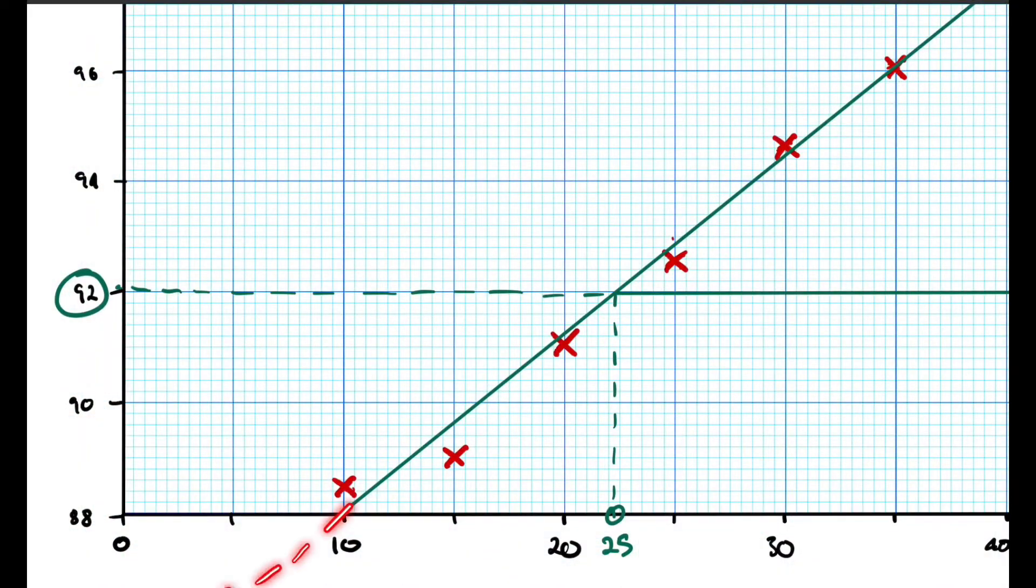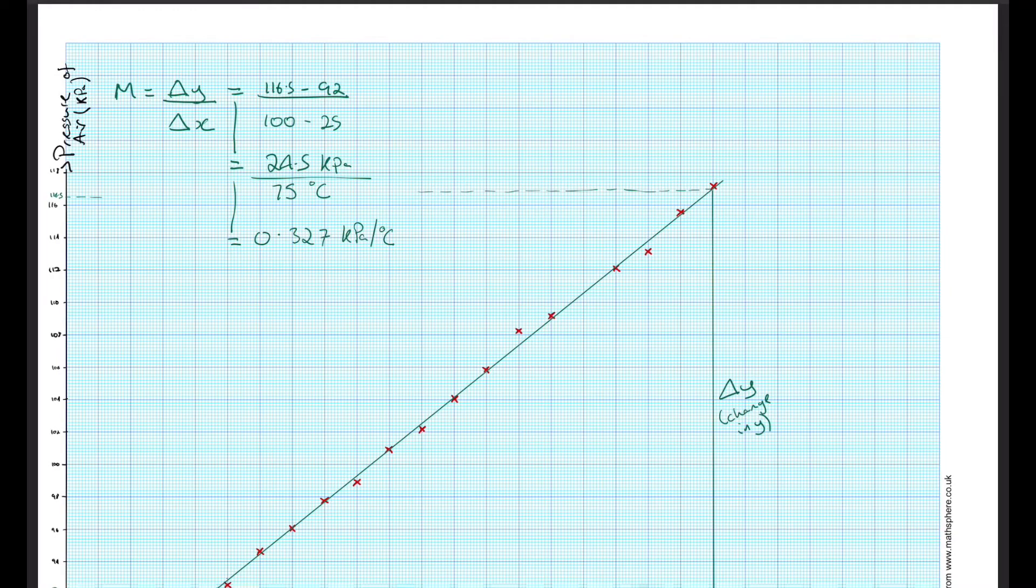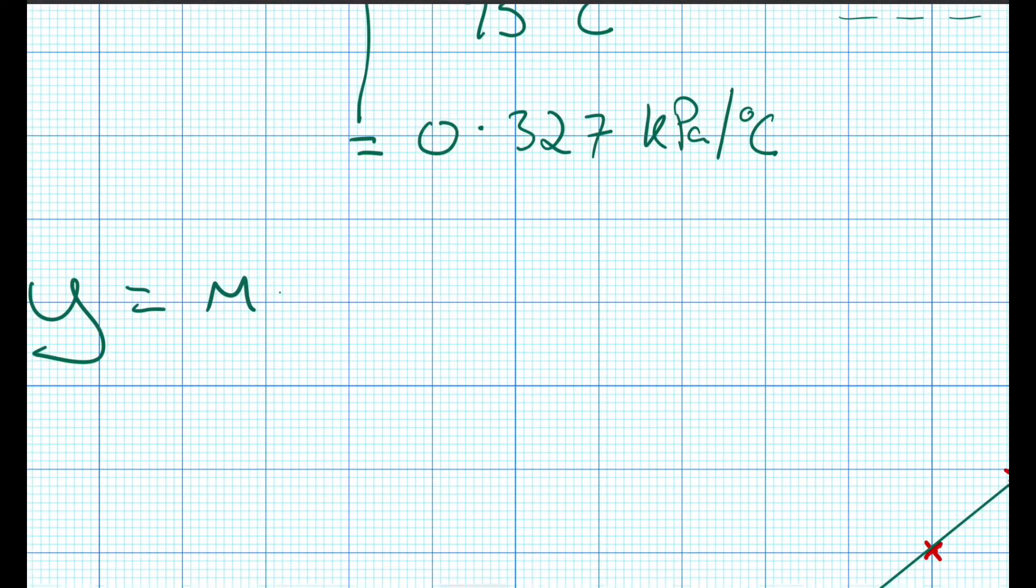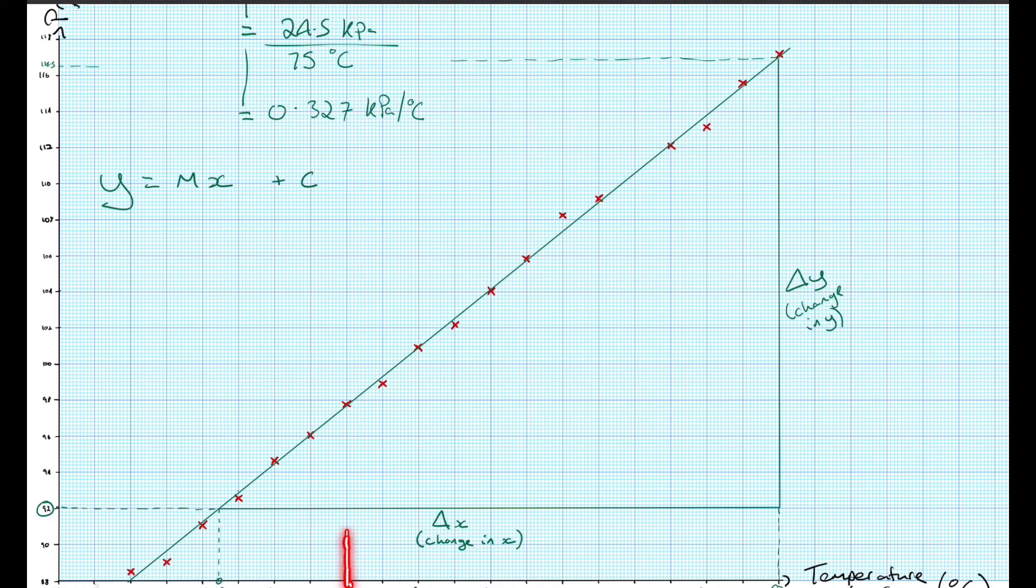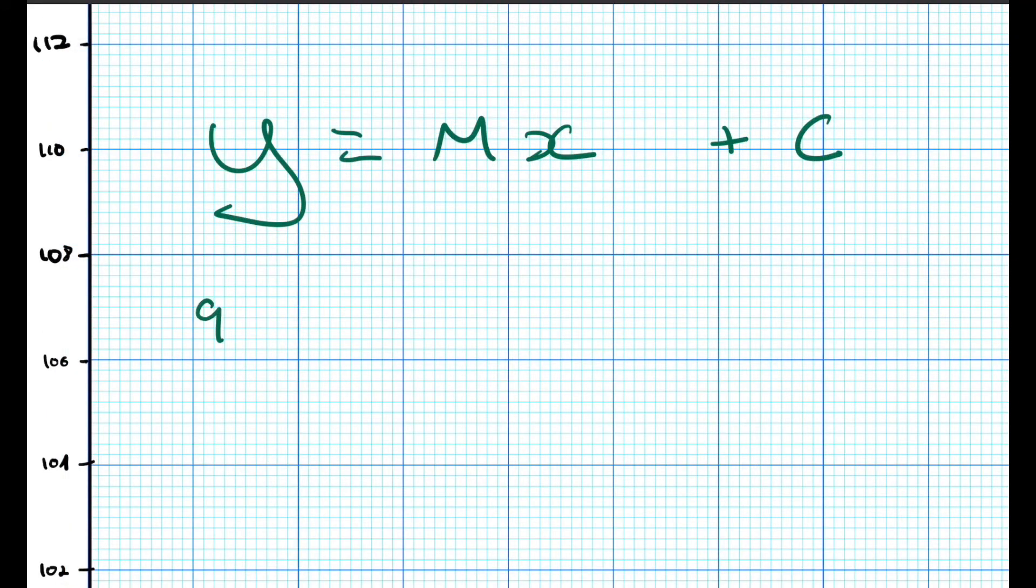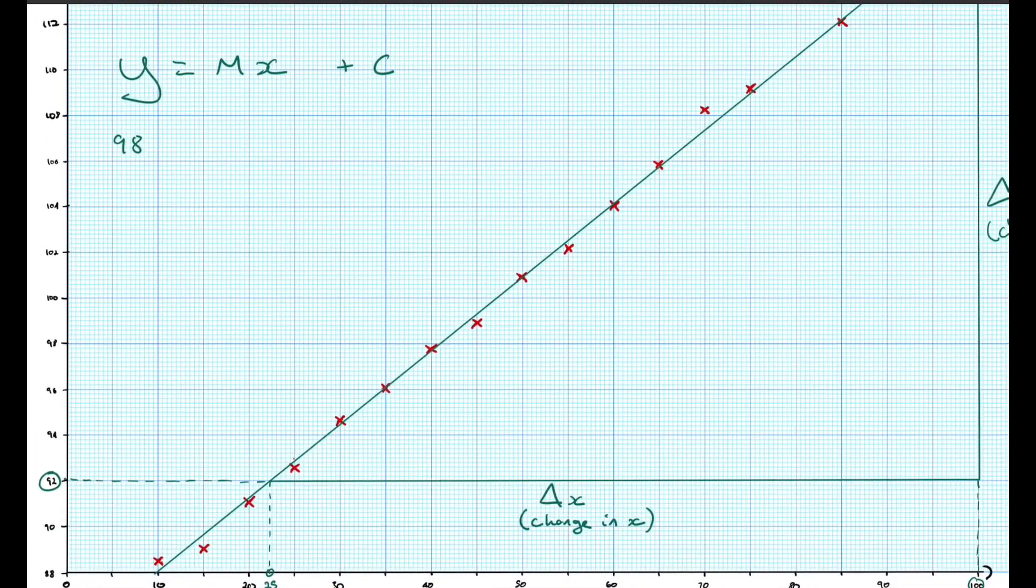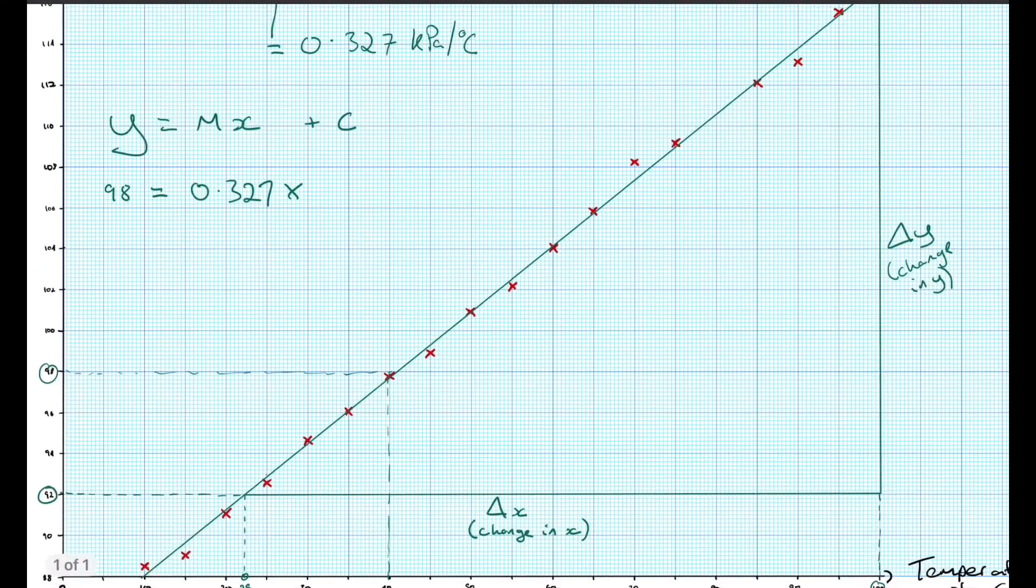The next piece of information that we need to work out absolute zero is the y-intercept. This goes off the corner of our graph paper so we will need to calculate it using the equation of a straight line: y equals mx plus c, where m is the gradient and c is the y-intercept. To calculate c we can use any pair of points on the graph. In this instance I'm using a pressure of 98 kilopascals and a temperature of 40 degrees Celsius. Substituting these into our equation and performing some simple calculations will tell us what c, the y-intercept, is.